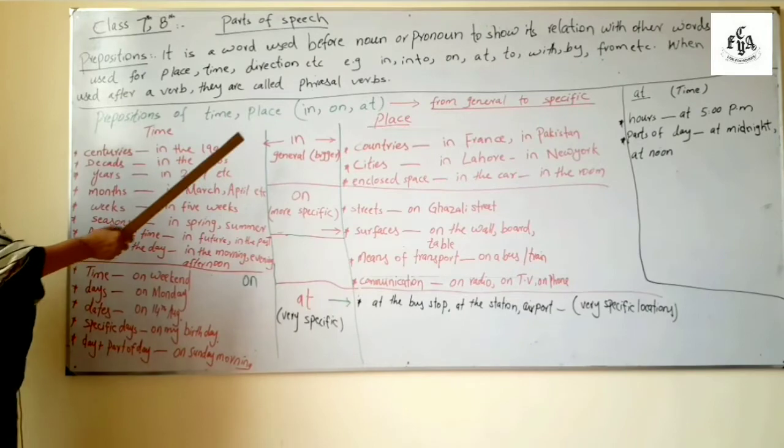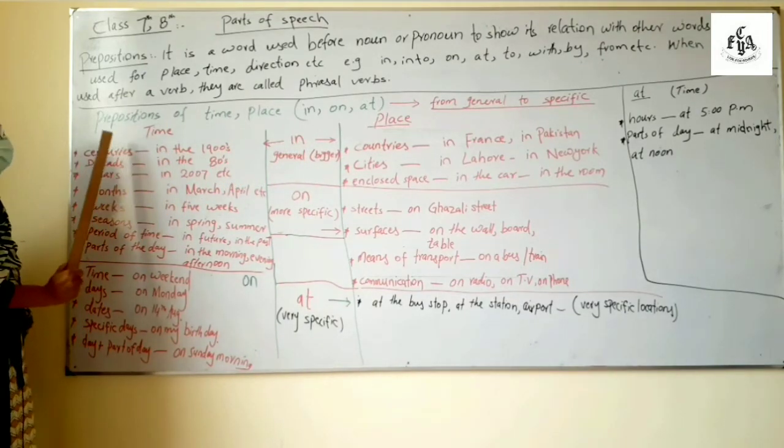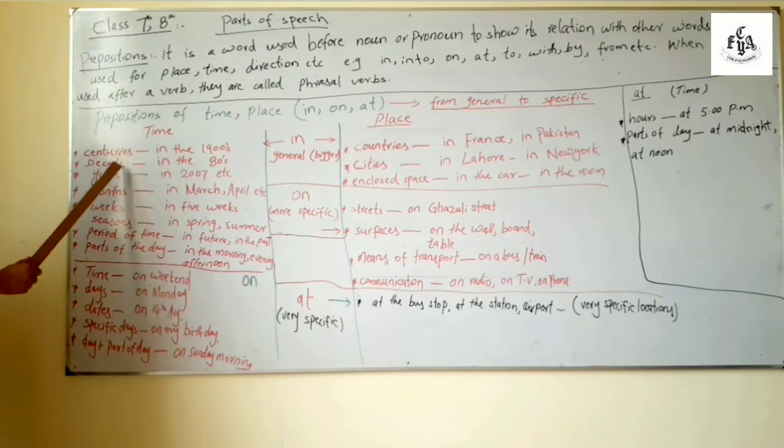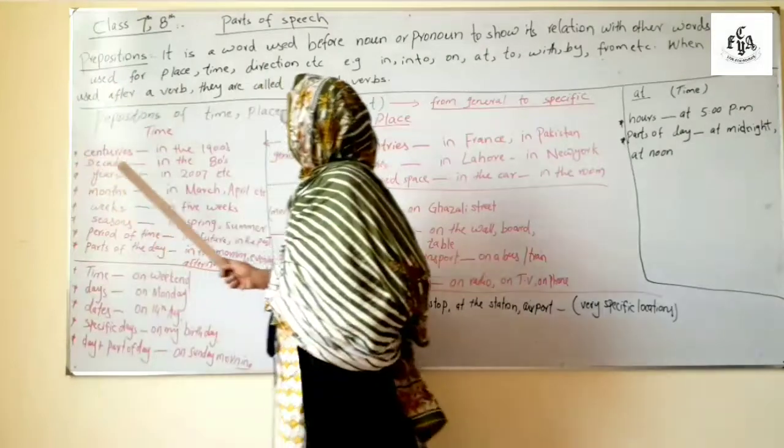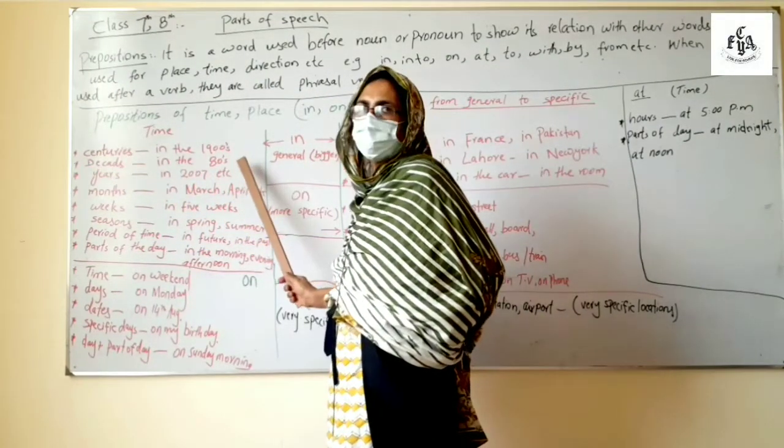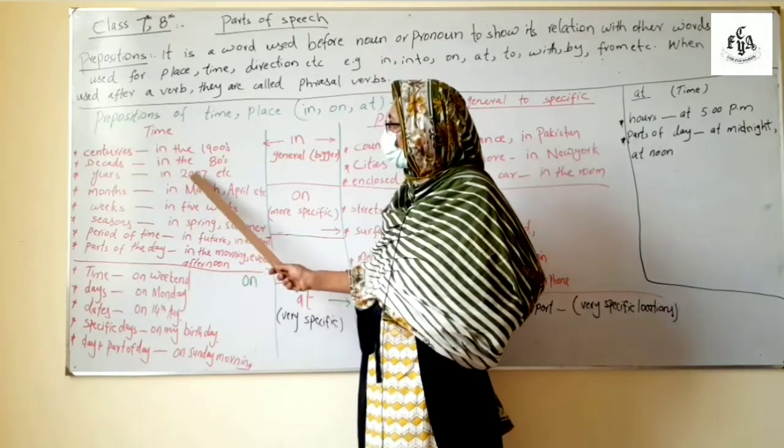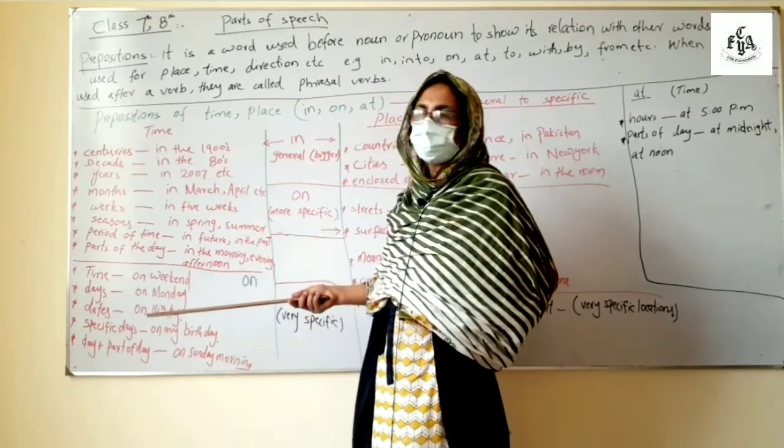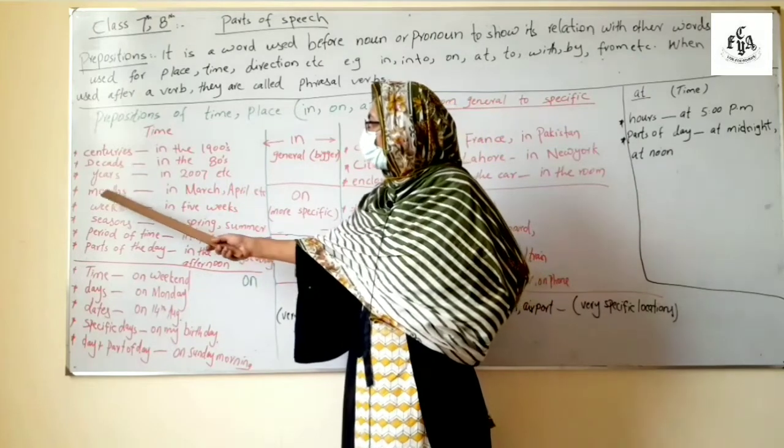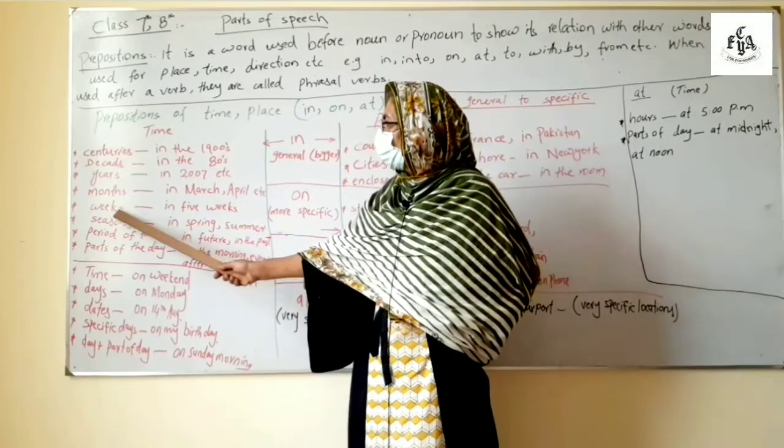Let's study the use of in with respect to time first. Like it is used before centuries, for example in the 1900s, before decades like in the 80s, in the 90s, before years like in 2007, in 2015, before months, for example in March, in April.